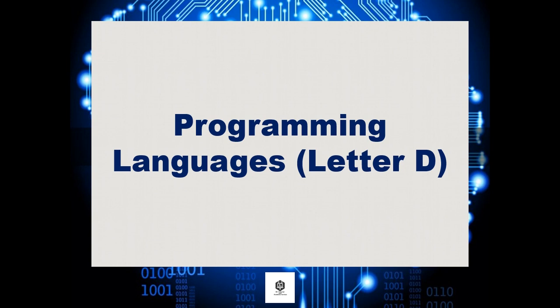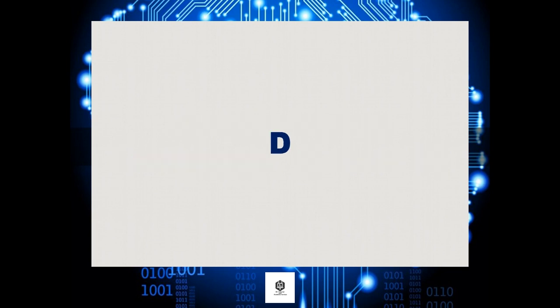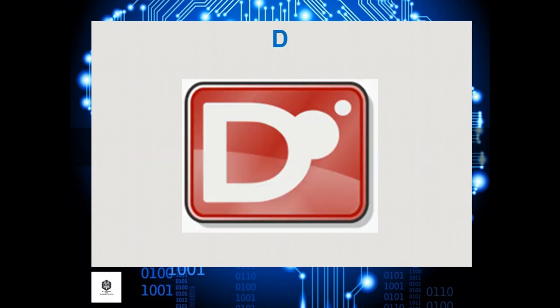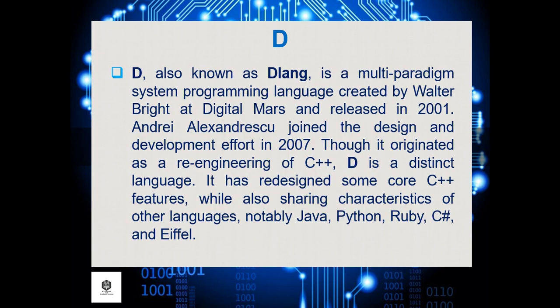Hello everyone, today we'll have a new lesson about programming languages starting with letter D. D, also known as D-lang, is a multi-paradigm system programming language created by Walter Bright at Digital Mars and released in 2001. Andrei Alexandrescu joined the design and development effort in 2007. Though it originated as a re-engineering of C++, D is a distinct language. It has redesigned some core C++ features while also sharing characteristics of other languages, notably Java, Python, Ruby, C#, and Eiffel.